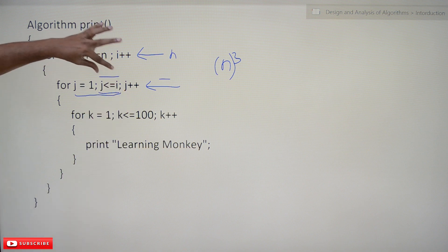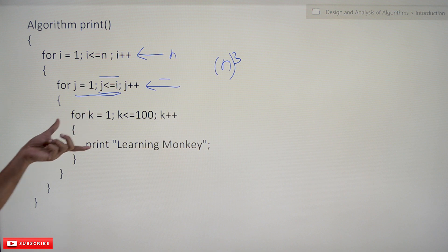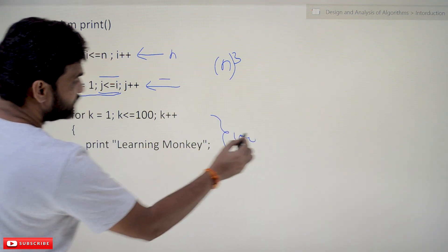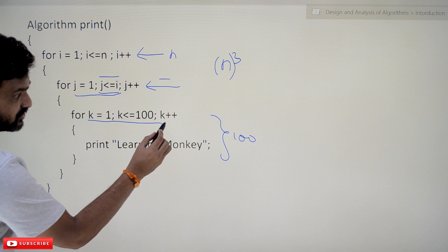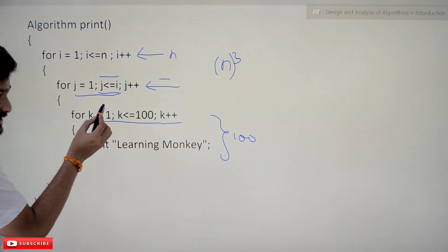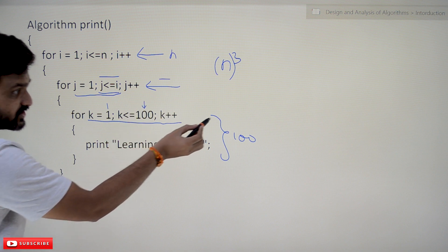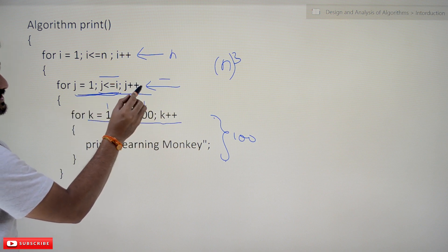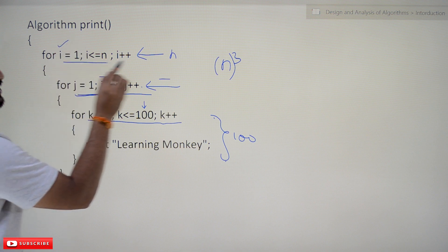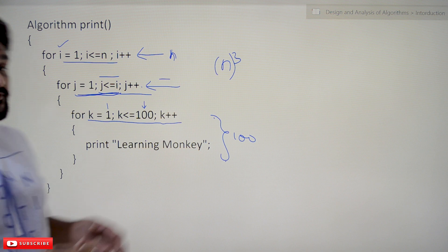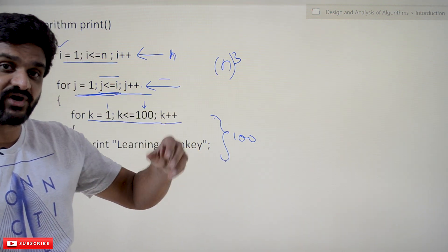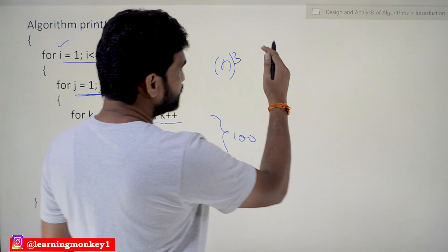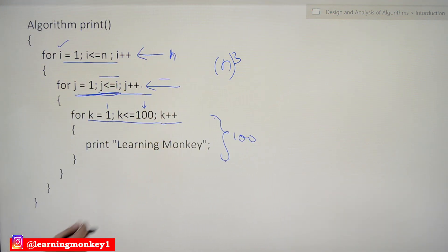The number of times the j-loop iterates is dependent upon the value of i. When we come into the innermost loop, it iterates a constant number of times: k goes from 1 to 100, so that loop always runs exactly 100 times. But how many times we enter it depends on the value of i. To analyze this, we break it down into small pieces and check each iteration.